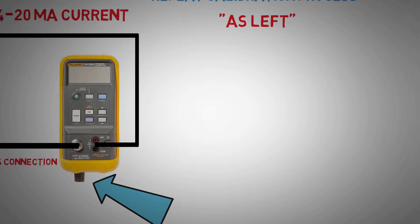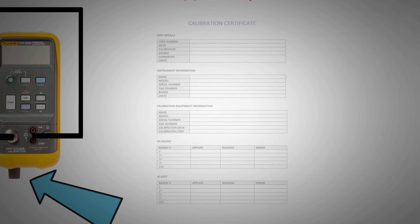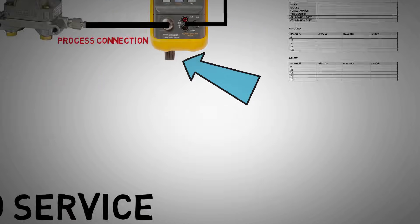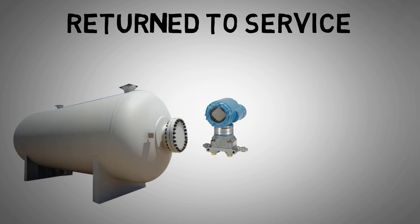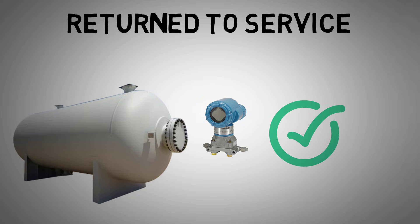The information we have obtained about the accuracy of the transmitter will be used to create a calibration certificate, usually electronically. This will then likely be stored in the maintenance management system for future reference. The equipment is usually labelled as calibrated and dated, and then returned to service.